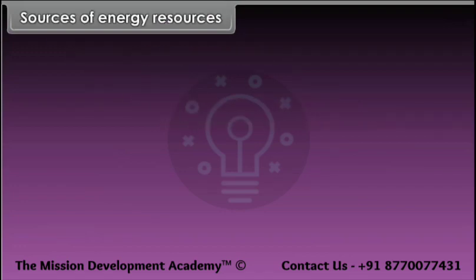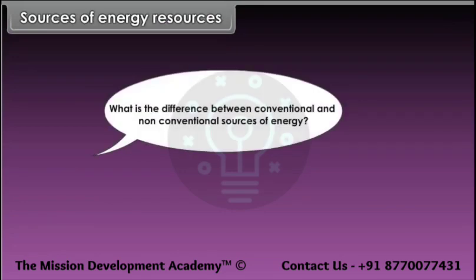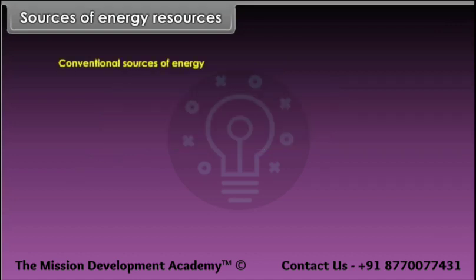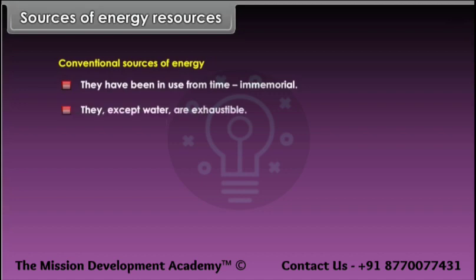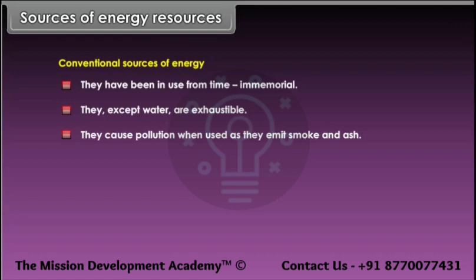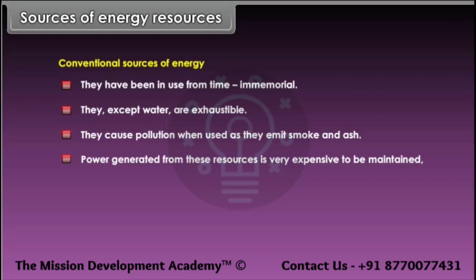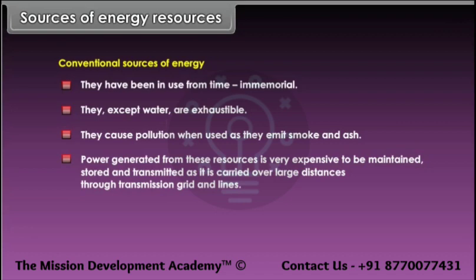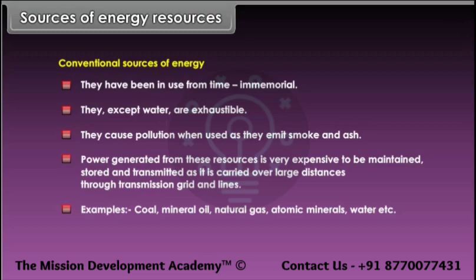Sources of energy resources — conventional sources: They have been in use from time immemorial. They are exhaustible (except water). They cause pollution when used, as they emit smoke and ash. Power generated is expensive to maintain, store and transmit over large distances through transmission grids and lines. Examples: coal, mineral oil, natural gas, atomic minerals, water, etc.